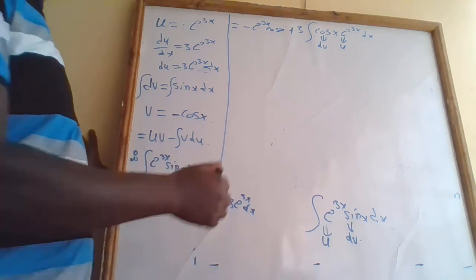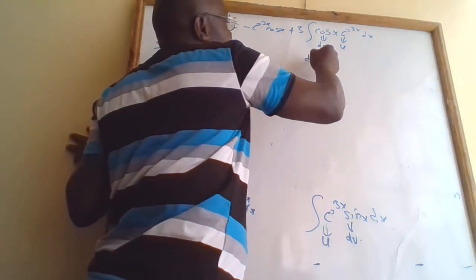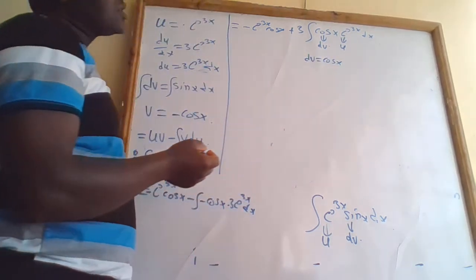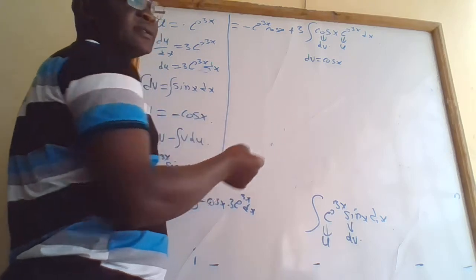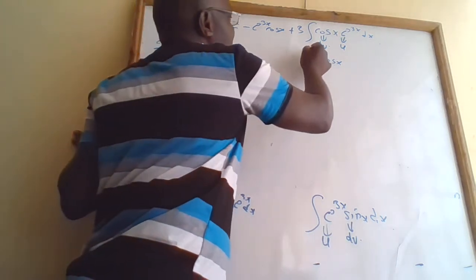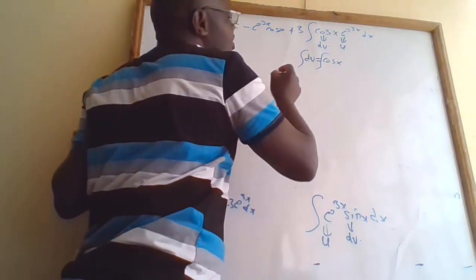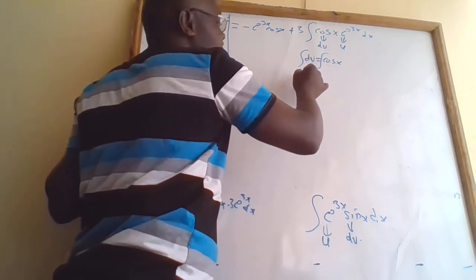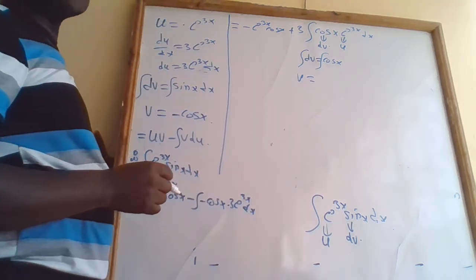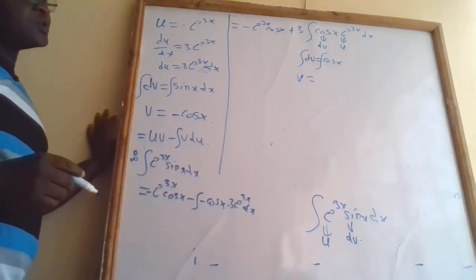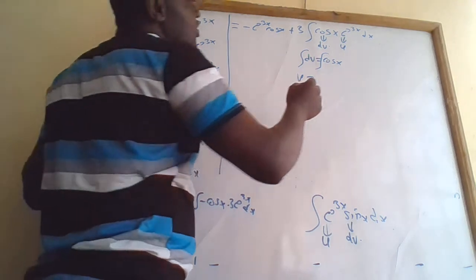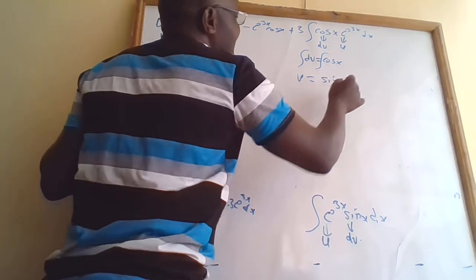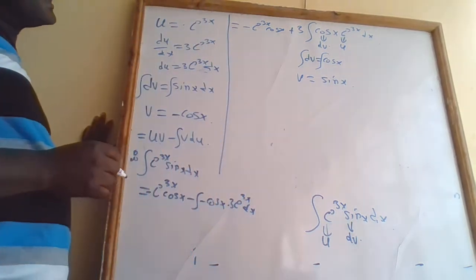So dv = cos(x) dx. To get the value of v, we integrate both sides. When you integrate cos(x), you get sin(x).